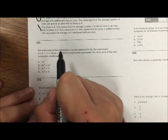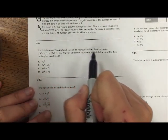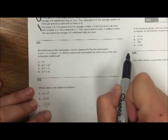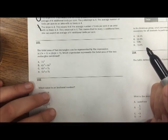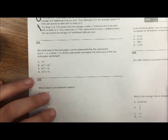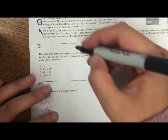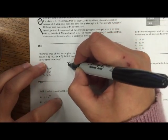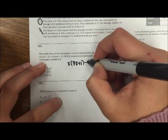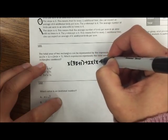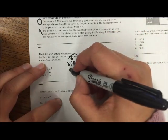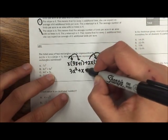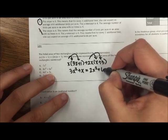101. The total area of two rectangles can be represented by the expression right here. Which expression represents the total of the two rectangles combined? So I want the total of the two rectangles combined. I'm going to go ahead and distribute some stuff. Let's go ahead and distribute the x and the 2x. So I get 3x squared plus x, and then I get 2x squared plus 6.